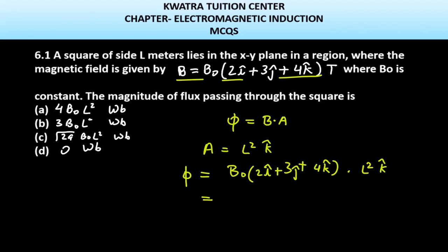Now multiply k̂ with k̂. If you do 2î and L²k̂, that's zero. So your first value is zero. Then ĵ·k̂ is also zero.